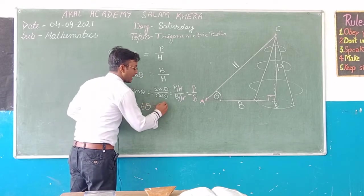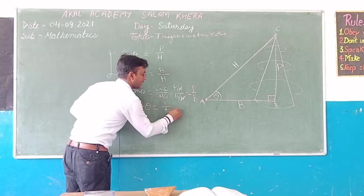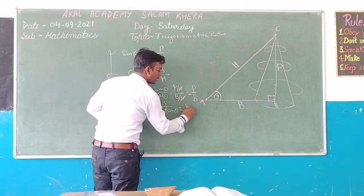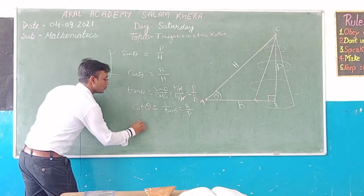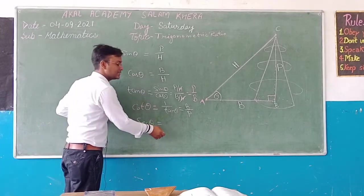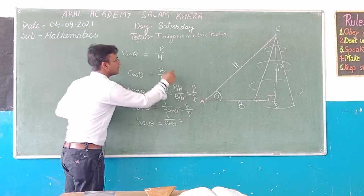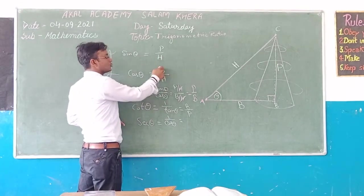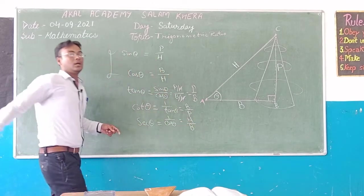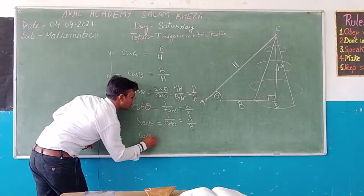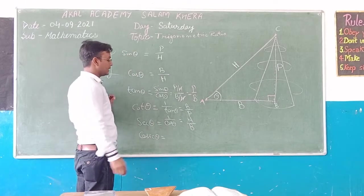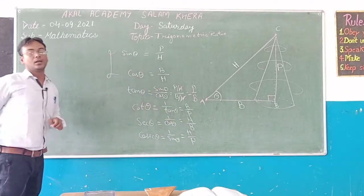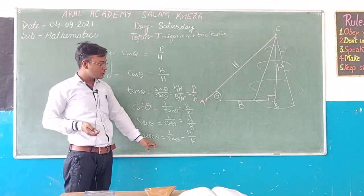The fourth ratio is cot theta, which is the reciprocal of tan theta, meaning 1 by tan theta. Since tan theta is perpendicular by base, cot theta equals base by perpendicular. The fifth ratio is secant theta, the reciprocal of cos theta. Since cos theta is base by hypotenuse, secant theta equals hypotenuse by base. The sixth and last ratio is cosecant theta, which is the reciprocal of sin theta, so cosecant theta equals H by P.